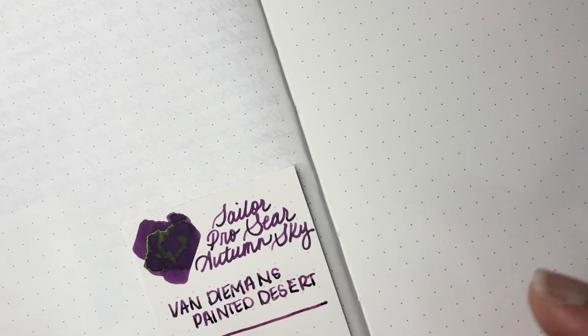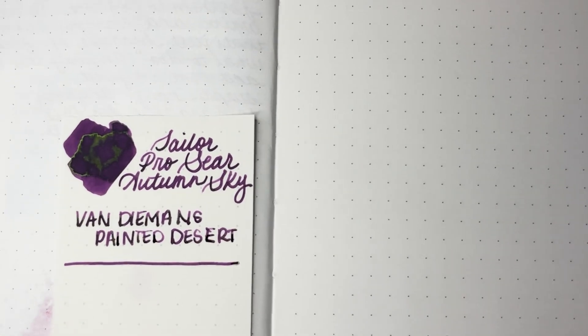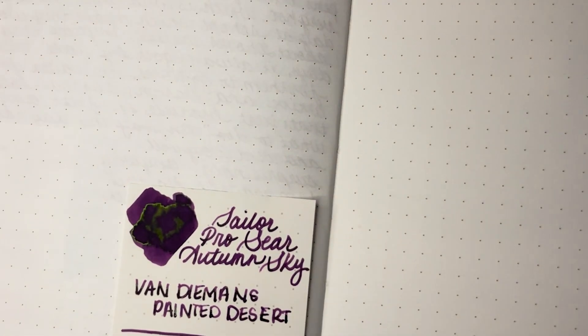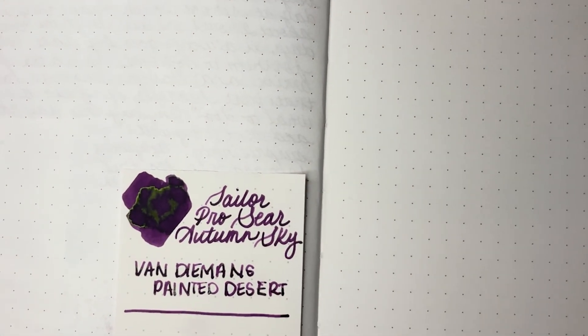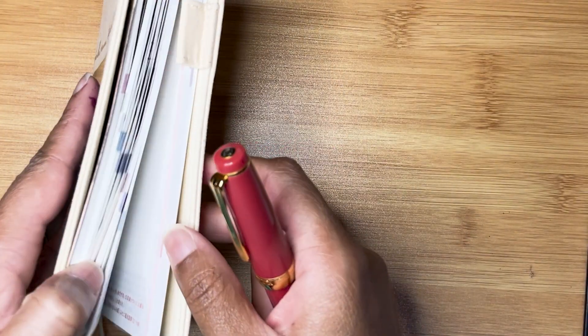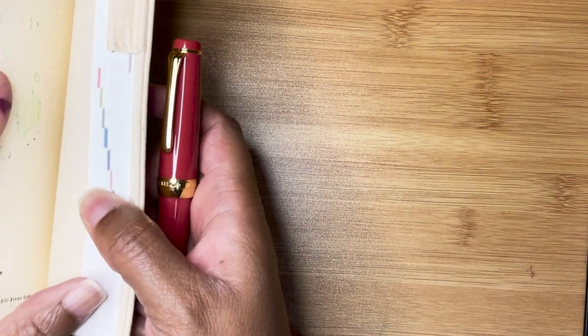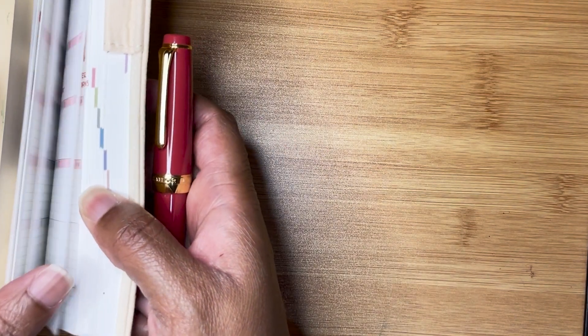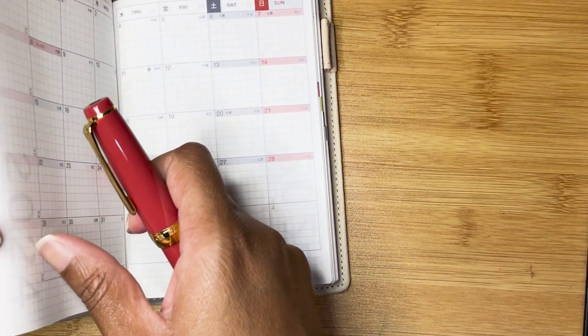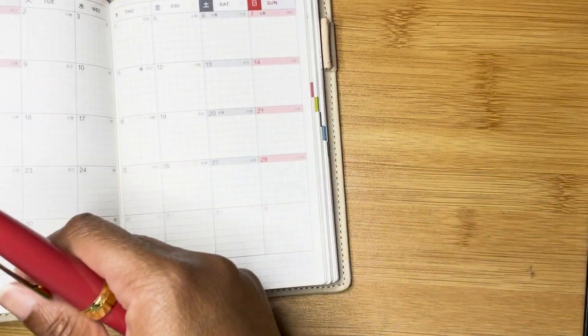So the sheen is showing in the downstrokes where it gets really dark for the shading, but I think that's so cool. This is going to be fun. So let's move this off to the side and then look at the monthly in my Hobonichi Techo A6.